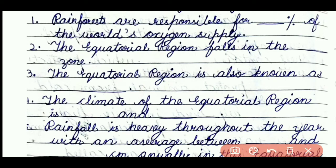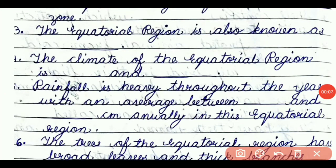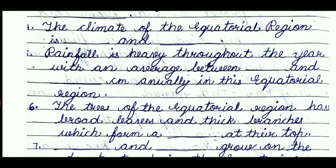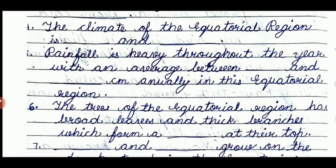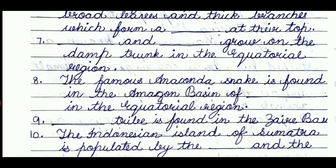Question number four: the climate of the equatorial region is dash and dash. The answer will be hot and humid. Question number five: rainfall is heavy throughout the year with an average between dash and dash centimeter annually in this equatorial region. The answer is 250 and 350 centimeter. Question number six: the trees of the equatorial region have broad leaves and thick branches which form a dash at the top. The answer will be canopy.